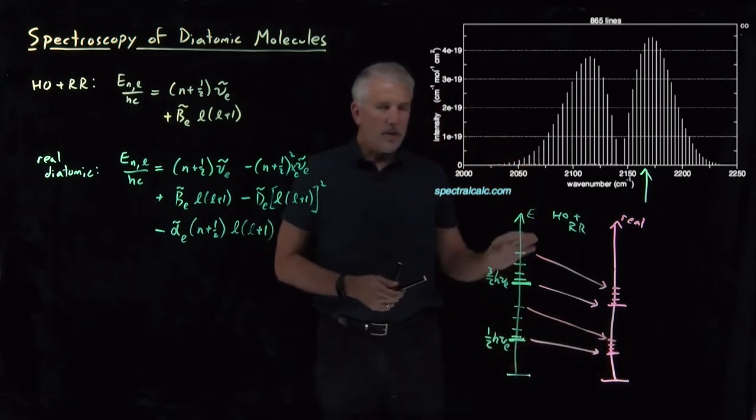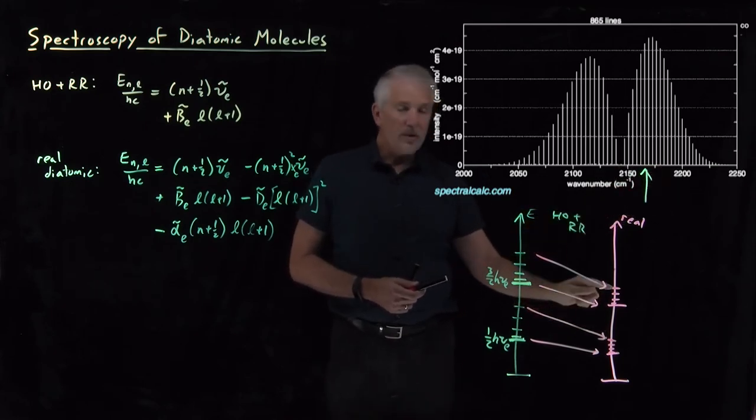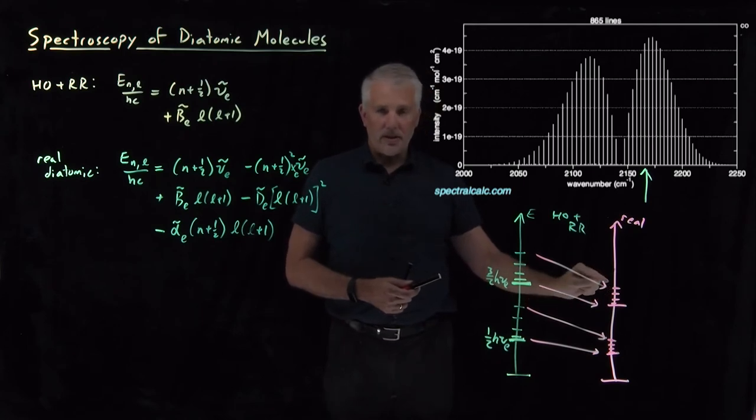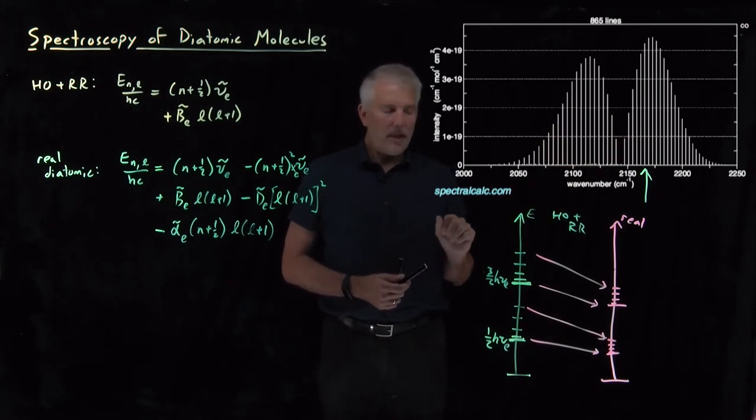So that means two things. That means not only do we get a redshift in these energies when we excite vibrationally, but also when we excite rotationally, those rotational excitations are lower than we would predict. When it comes to looking at the details of this spectrum, that makes things, in fact, a little more complicated.